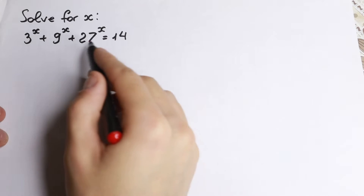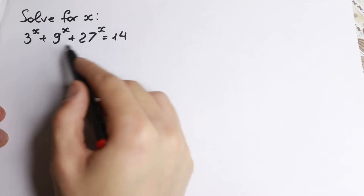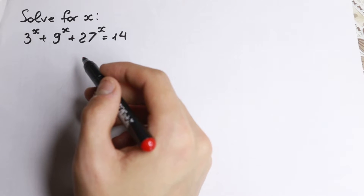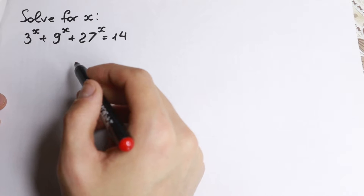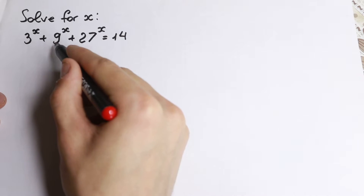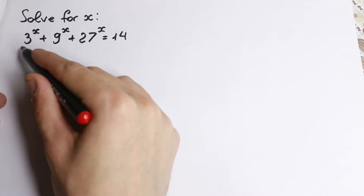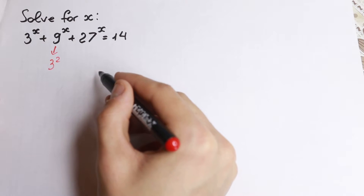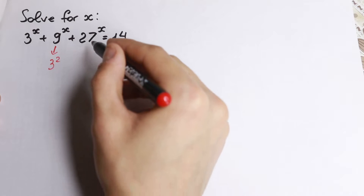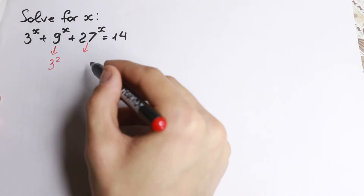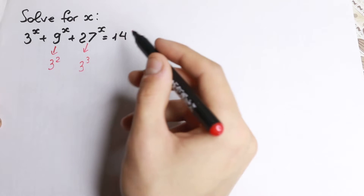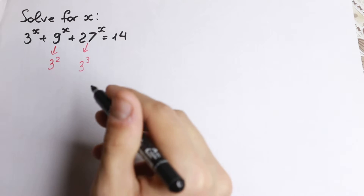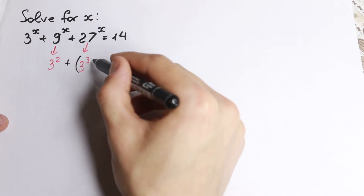First of all, we have all different bases: 3, 9, and 27 — all bases are different, and we have a lot of exponents, so it looks like a complicated problem. But if you look a little bit closer, 9 is a really good number relative to 3 because we can express 9 as 3 squared. And 27 is also a great number because we can express it as 3 cubed, since 3 times 3 times 3 equals 27. So 3 squared equals 9. Let's write all the remaining terms.